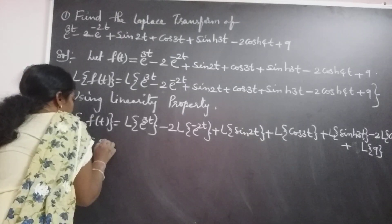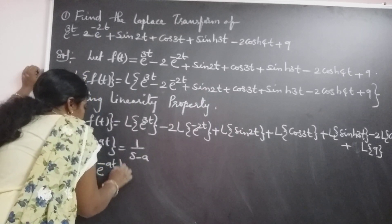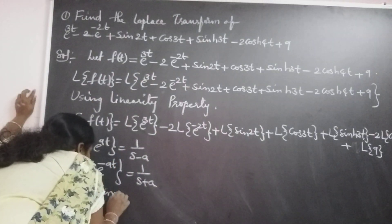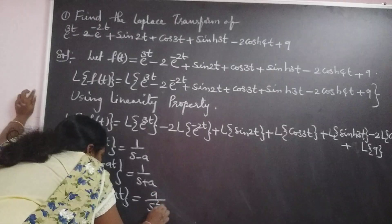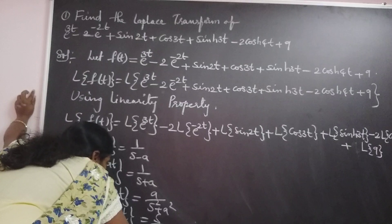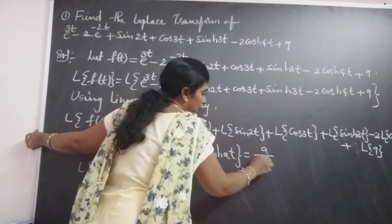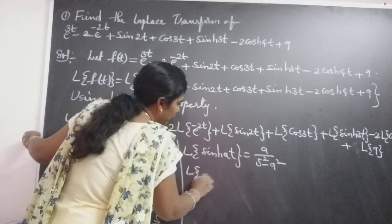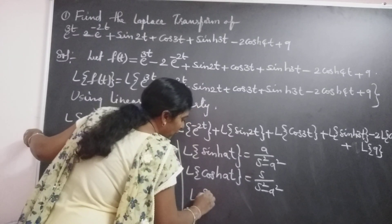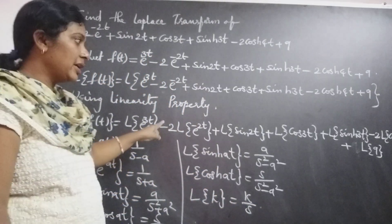The elementary properties used are: L of e power at equals 1 by s minus a; L of e power minus at equals 1 by s plus a; L of sin at equals a by s squared plus a squared; L of cos at equals s by s squared plus a squared; L of sinh at equals a by s squared minus a squared; L of cosh at equals s by s squared minus a squared; and L of a constant k equals k by s.